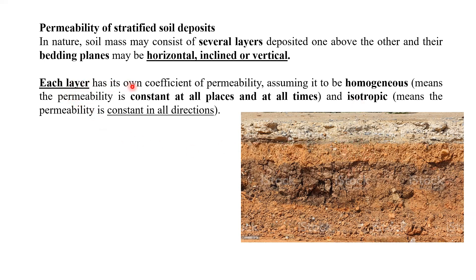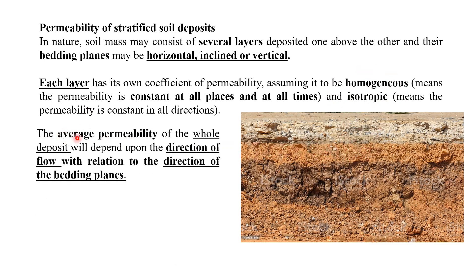We are going to assume that each layer has its own coefficient of permeability. Definitely this layer will have a different permeability, and this layer will have a different permeability. We are going to assume that the material is homogeneous and isotropic. Homogeneous means the permeability is constant at all places and at all times. Isotropic means the permeability is constant in all directions — whether perpendicular, parallel, or any direction — the permeability will be the same in each layer.